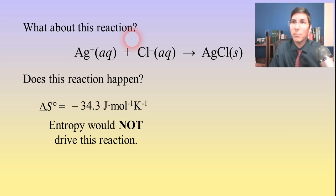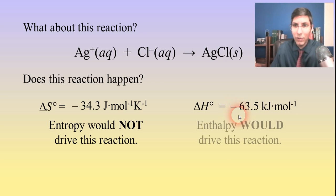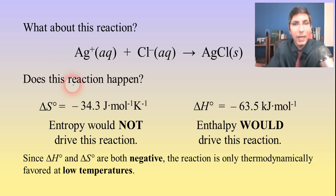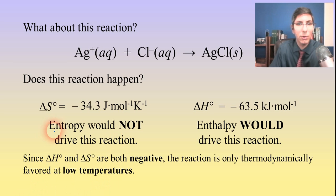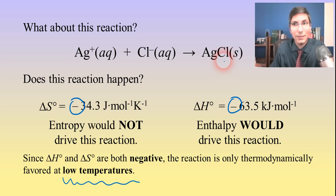We know the reaction happens, so it's got to be driven by the other force — enthalpy. If you look at the delta H, it is an exothermic reaction; it's negative. So when the reaction happens, it's driven by the enthalpy. Since both delta H and delta S are negative, the reaction is a TFP — thermodynamically favored at relatively low temperatures. This means that if you raise the temperature high enough, the silver chloride will dissolve, which is consistent with what we've learned in solution chemistry: at high enough temperatures, you can get almost anything to dissolve.